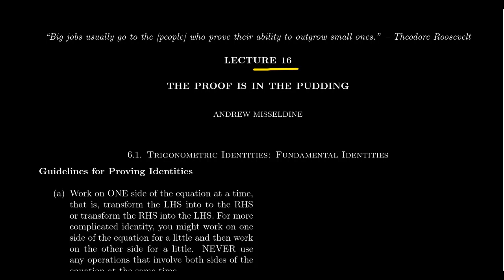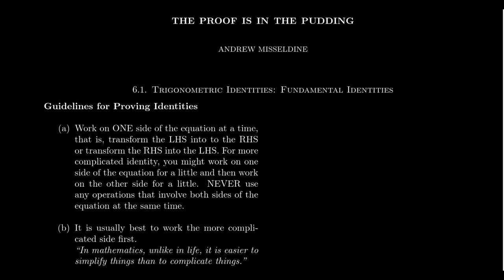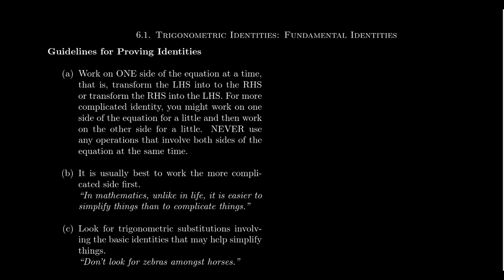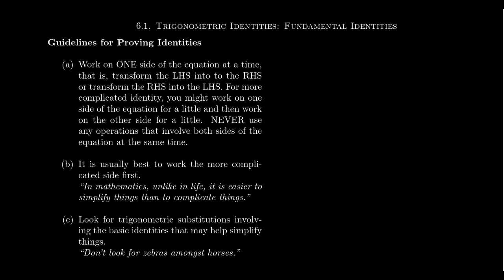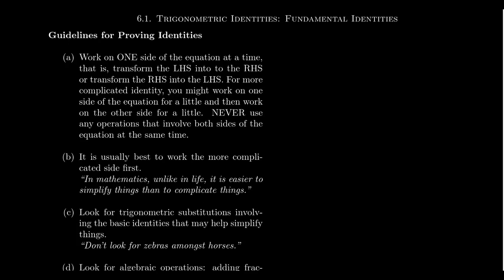In lecture 16, we're going to continue our discussion of trigonometric identities. Now that we've learned the fundamental identities and we've seen how we can use them to start proving trigonometric identities, we're going to start doing that in full force now. But before we jump into the deep end of the pool, there are a few guidelines I want to mention that'll help us as we prove them. These are not techniques for proving them, but guideposts that we should stay between so that we don't make mistakes while proving these trigonometric identities.